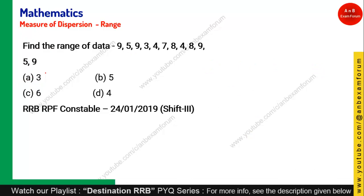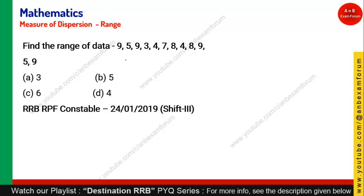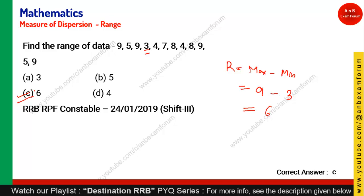Let's see the next question — again a very simple one. Find the range of the data. Range means maximum minus minimum. The maximum value out of these is 9, and the minimum is 3 — we cannot find anything less than 3. So 9 minus 3 is 6. Option C is the right answer.